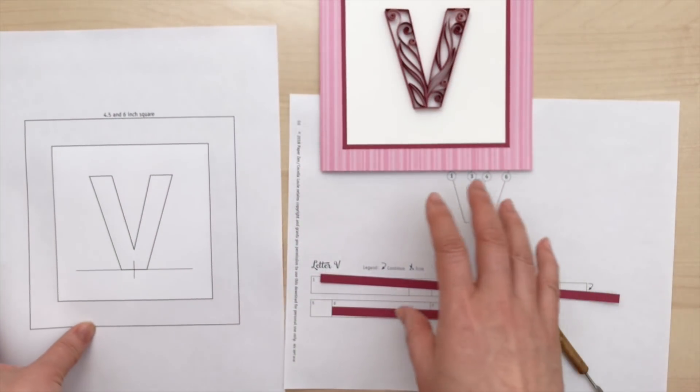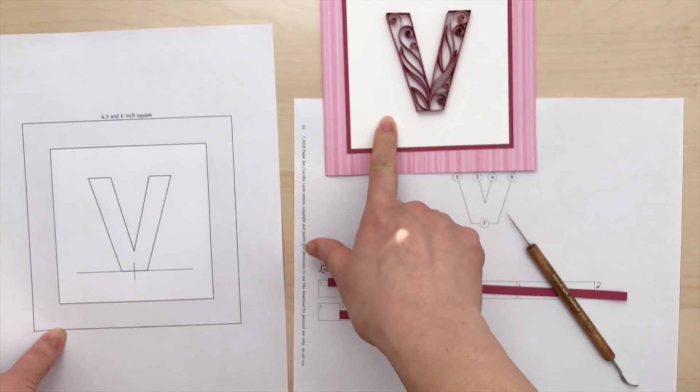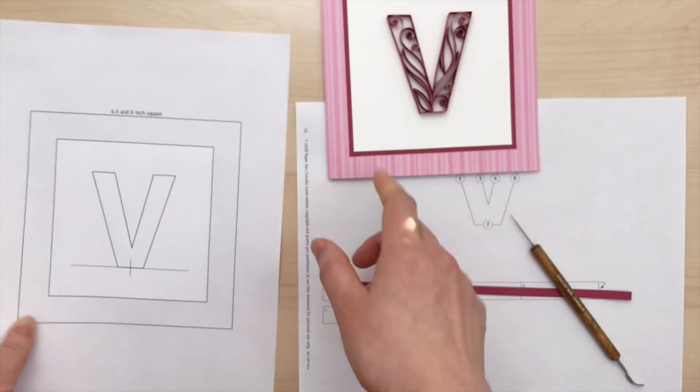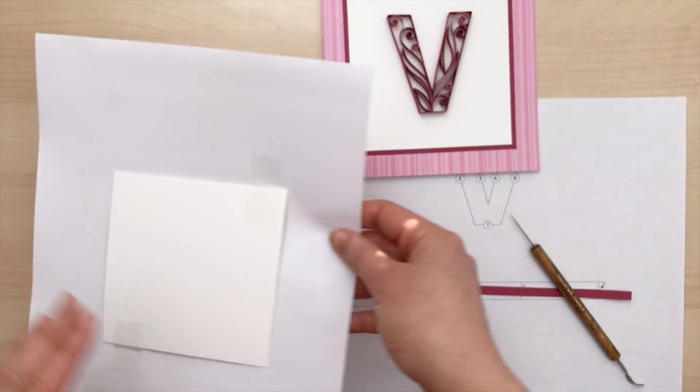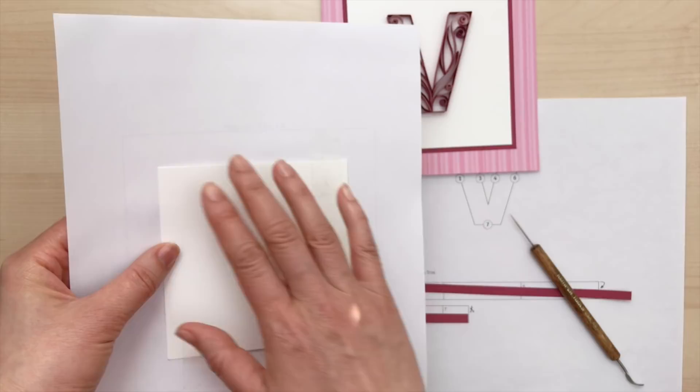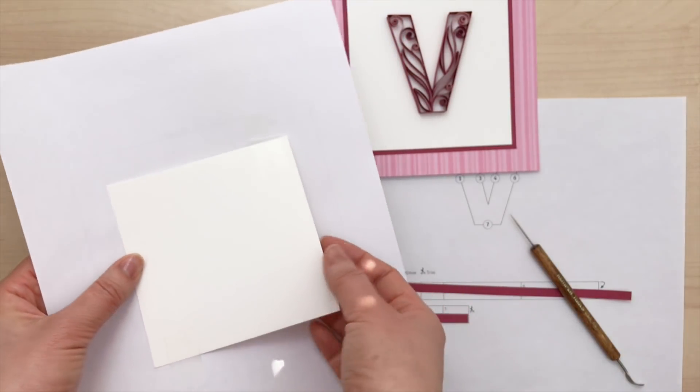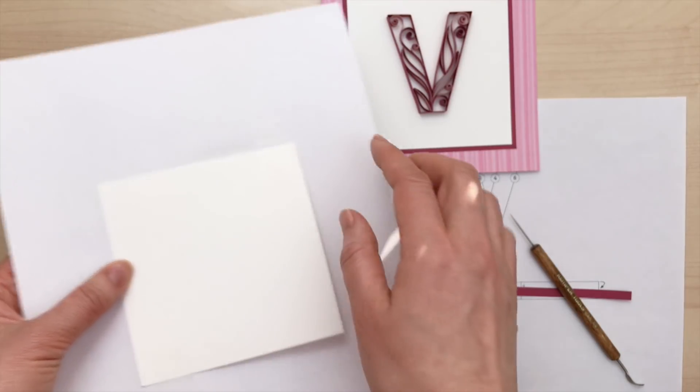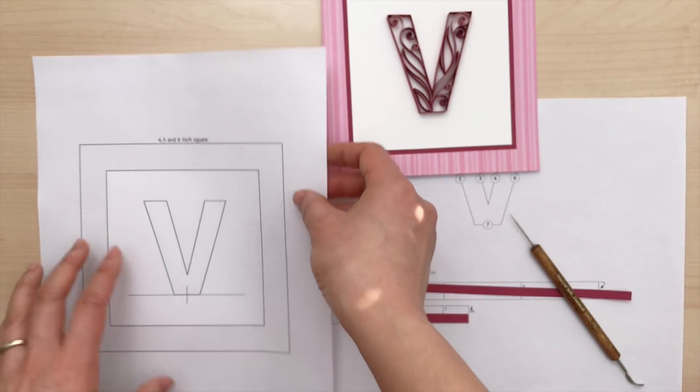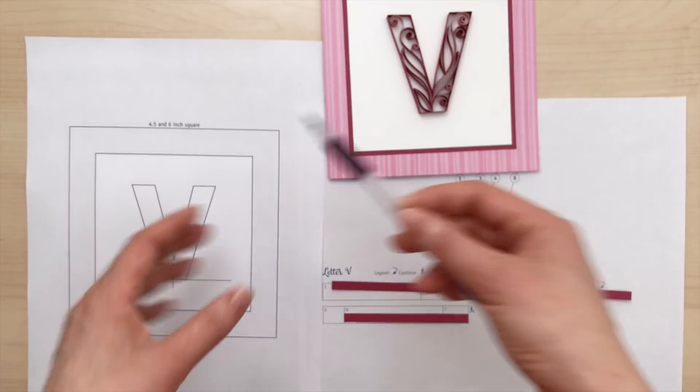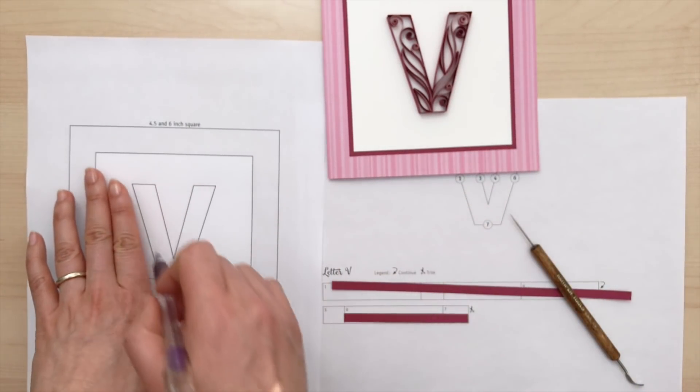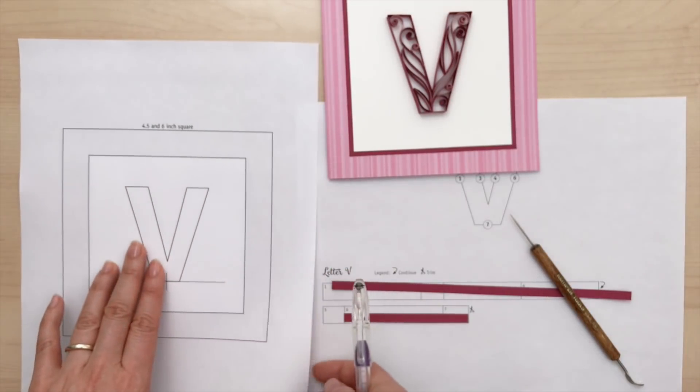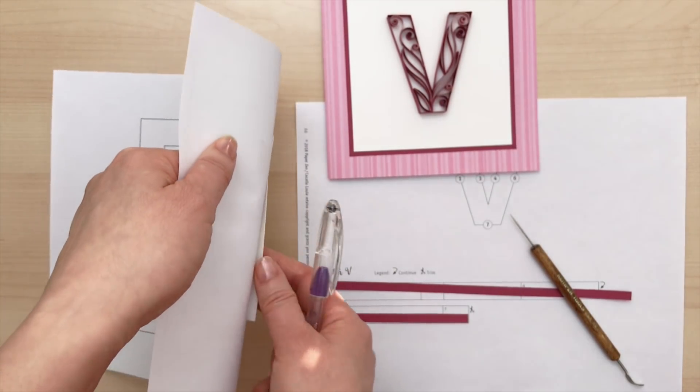So we just start off with the white cardstock here first. I've already trimmed a 4½ inch square out. I went to a sunny window and put my template against the window and followed that outline and put my cardstock against it, taping it in place using removable tape. Then I came back to my desk and used a dried up pen and ruler to follow along all these lines and have already put the impression of the letter V onto the card.